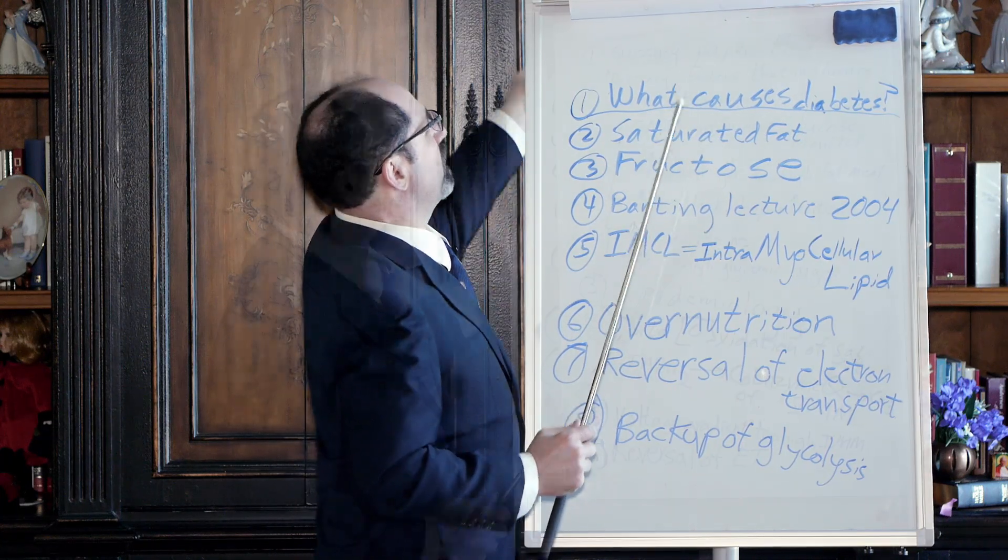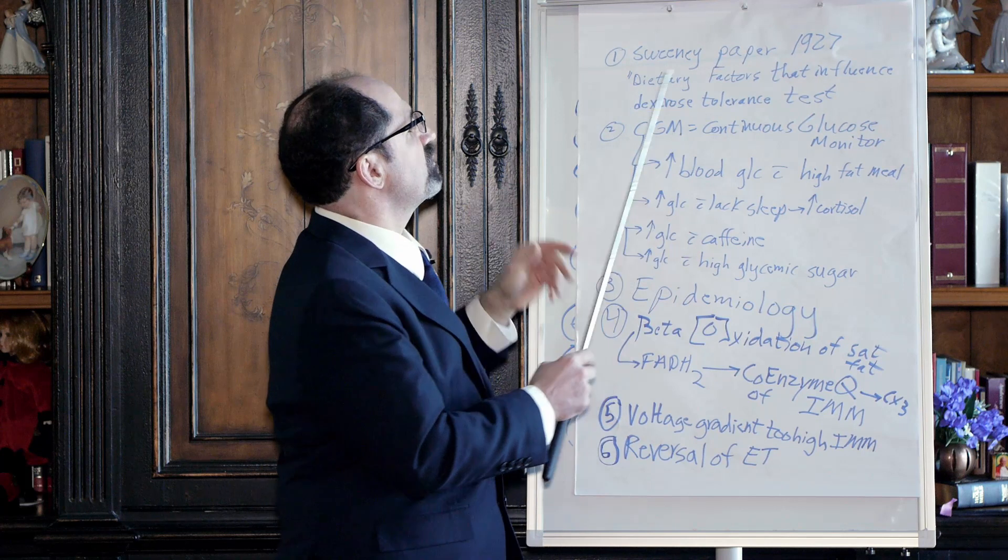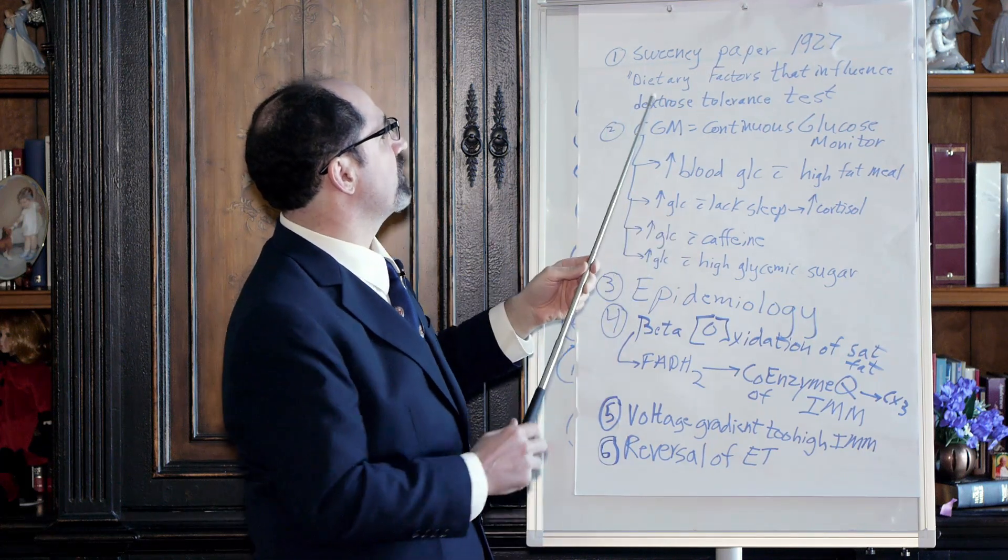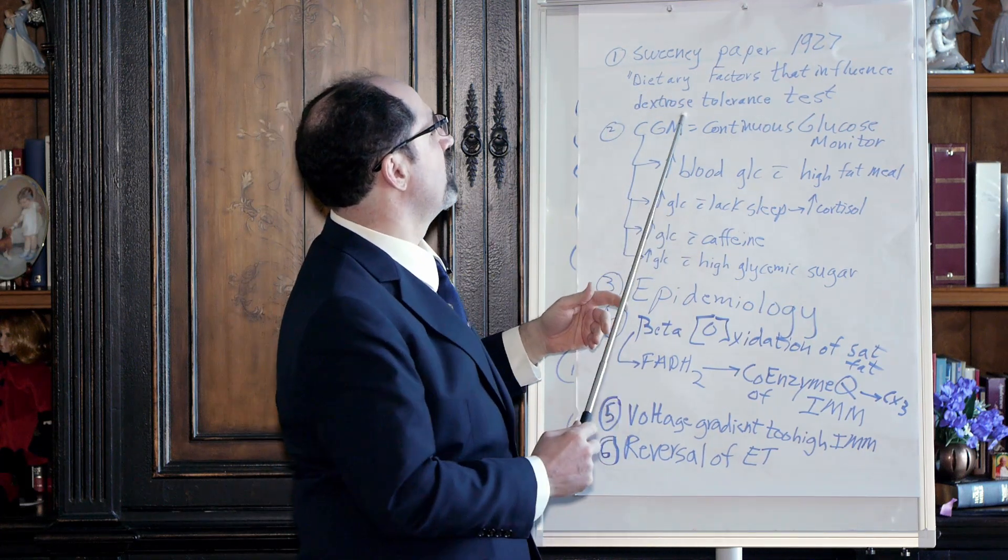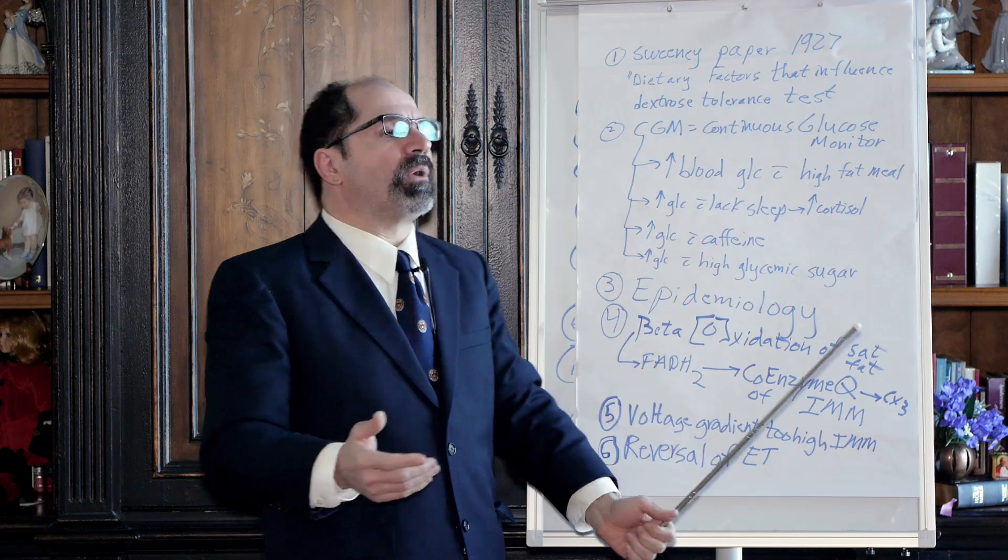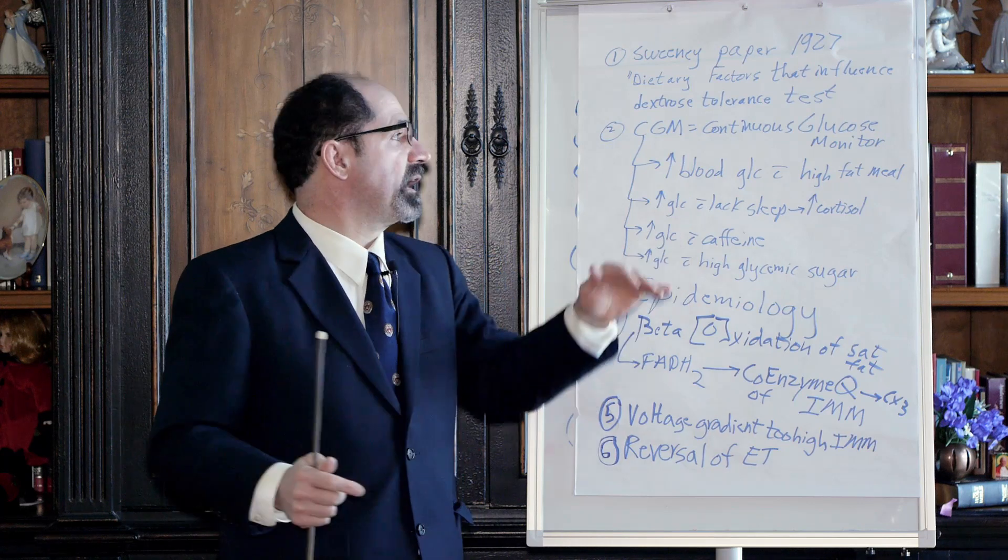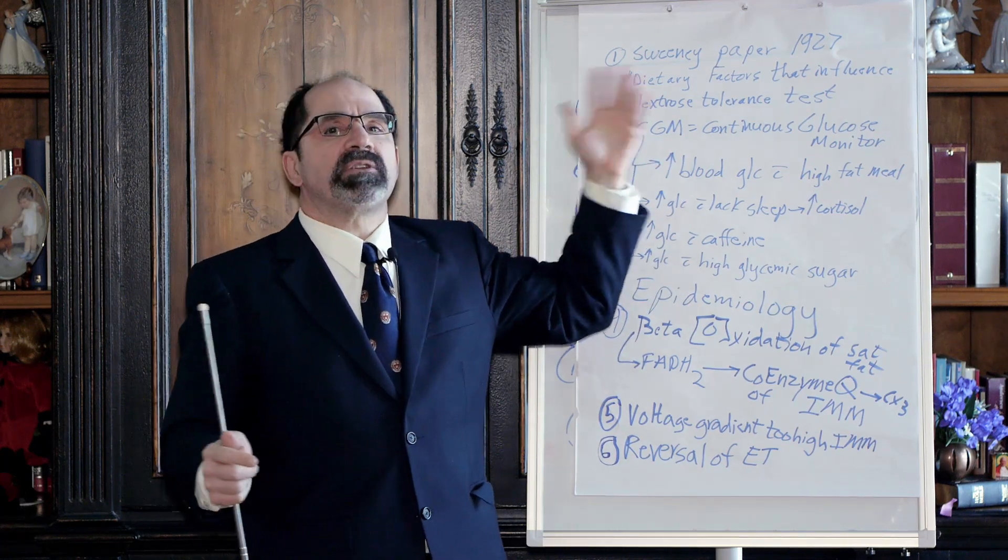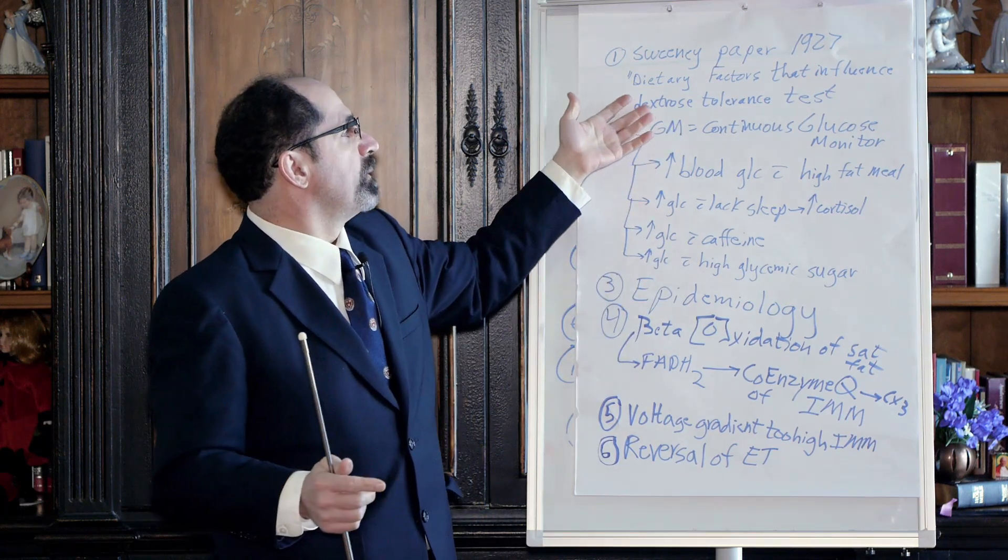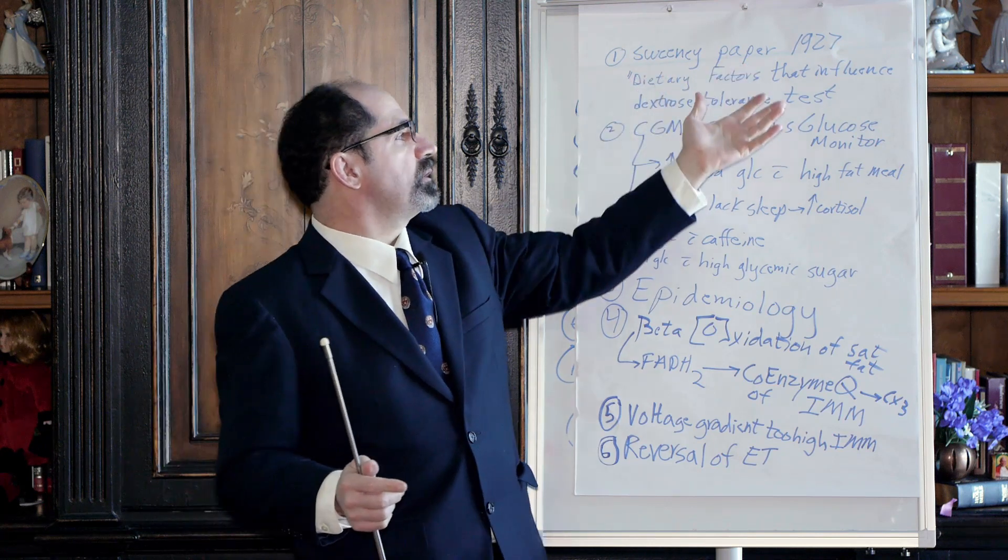A couple more things on papers. Sweeney's paper, back in 1927, called Dietary Factors That Influence Dextrose Tolerance Test. The point of that was, you could feed a high fat meal to a bunch of young people, college age, medical student age, and they'll start developing insulin resistance. That's been shown close to 100 years ago.